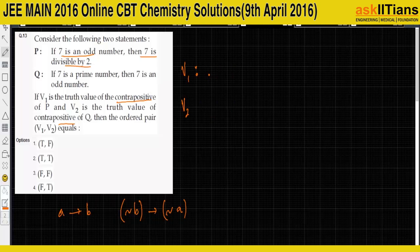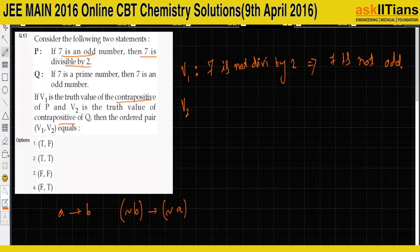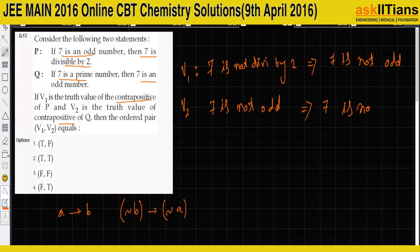V1 is the contrapositive of P: '7 is not divisible by 2 implies 7 is not odd.' Now 7 is indeed not divisible by 2, but the conclusion '7 is not odd' is false since 7 is odd. So V1 is false.